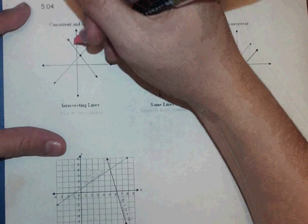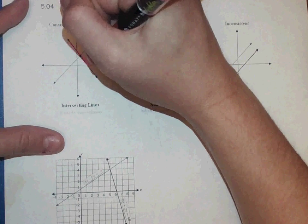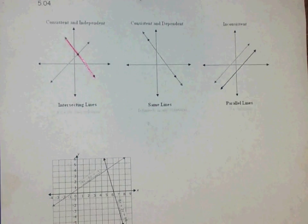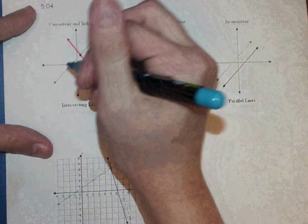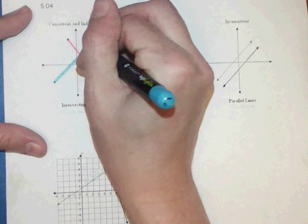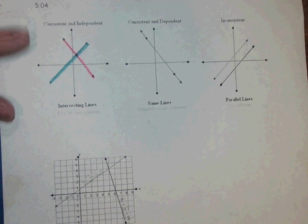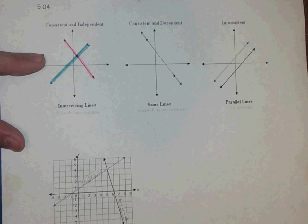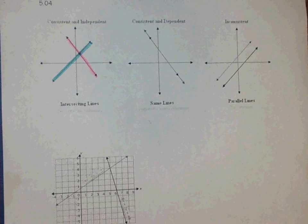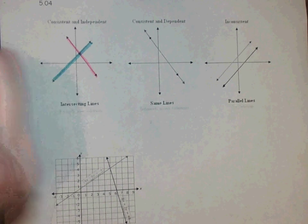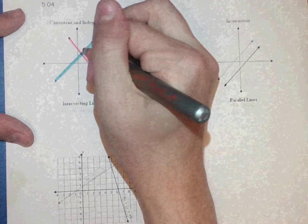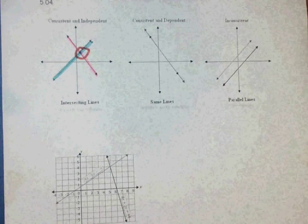Now what you notice, when we're talking about something being consistent, that means that pair of lines, that system of equations, has a solution. If you look at this first one, we could classify this as consistent because it does have a solution. It does meet right here where they cross.